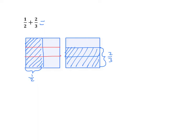So what are we doing here? We're basically taking our 1 half and multiplying both the numerator and the denominator by the denominator of the other addend. So let's write this out. I have 1 times 3 over 2 times 3. We find the products of each of these and we'd see that we'd have 3 sixths — and that's what's represented there.